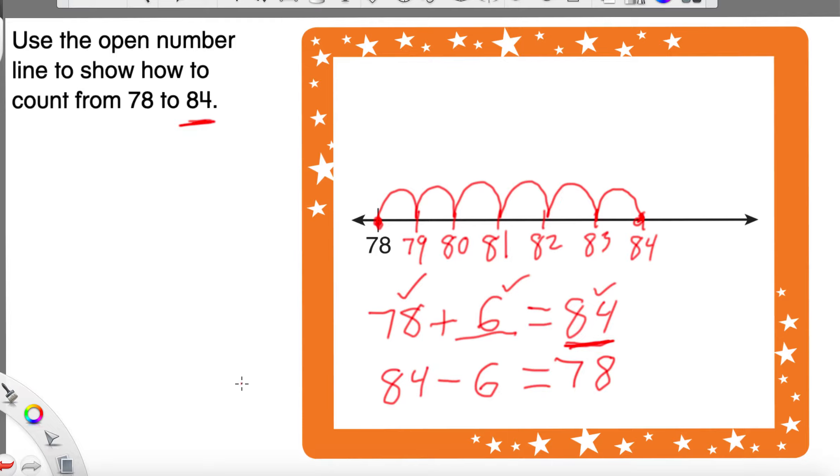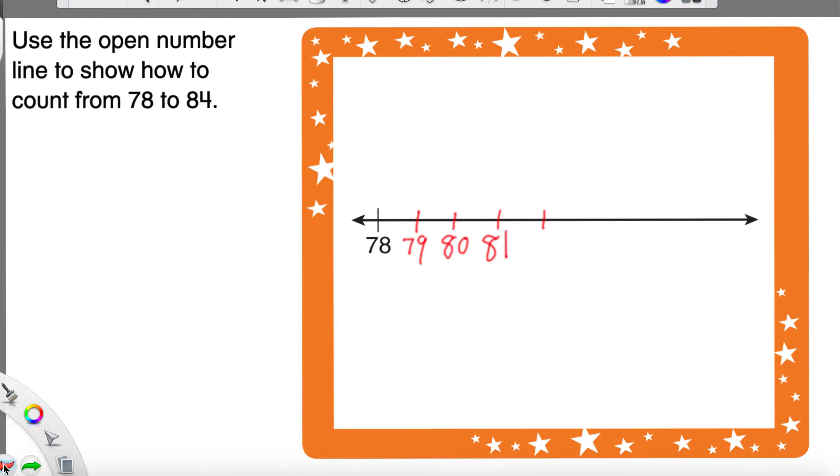You know what? I want to do one more practice problem because I know that there's a similar one on the next page and I want to make sure no one is confused. So, I'm going to erase this real quick. Anywhere you have on your page, maybe you have some extra space above the open number line we just did or below. Wherever you have some extra room, we're going to make our own number line.